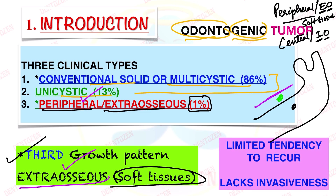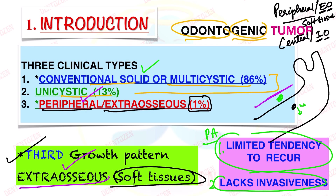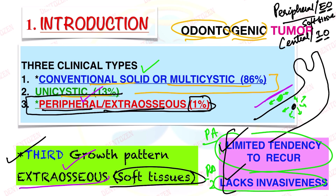Now why is it considered a separate type? Because it has limited tendency to recur — solid ameloblastoma can recur again and again, whereas peripheral ameloblastoma shows less recurrence. Second, it lacks invasiveness. Unlike solid ameloblastoma which can infiltrate into bone, peripheral ameloblastoma will not invade. Because of these two reasons — limited tendency to recur and lack of invasiveness — it is recognized as a separate type: peripheral or extraosseous ameloblastoma.